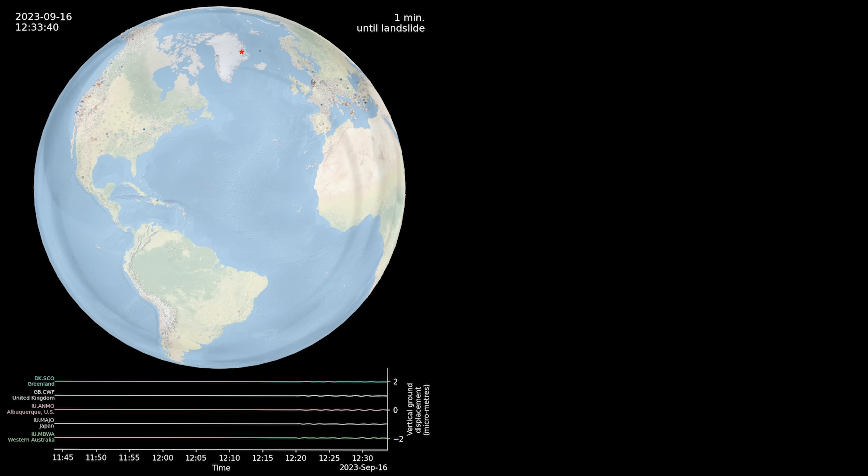Starting on the 16th of September 2023, we detected a completely unusual seismic signal. It looked like nothing we had ever seen before. It came from somewhere in East Greenland and it spread around the world from the Arctic to Antarctica in less than an hour.